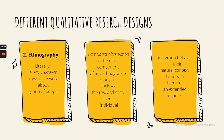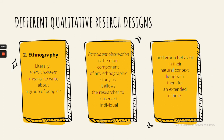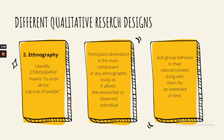The second design is ethnography. Literally, ethnography means to write about a group of people. In ethnography you study a group of people and look into their culture. Participant observation is the main component of any ethnographic study, as it allows the researcher to observe individual and group behavior in their natural context — living with them for an extended period of time, studying how they eat, plant, and sleep — everything regarding their culture and way of living.